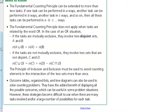If the tasks are not mutually exclusive, so if there's some overlap, then they involve two sets that are not disjoint, C and D. Then you can find the total number by subtracting that overlap. The Principle of Inclusion and Exclusion must be used to avoid counting elements in the intersection of the two sets more than once.